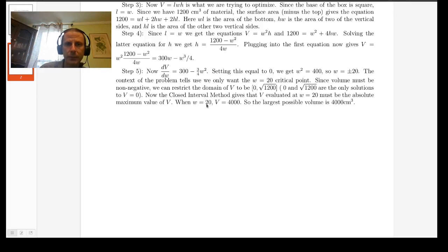So therefore the largest possible volume happens when the width is 20 and I suppose we could have calculated the height while we're at it. How do we get height? We know that the height has to be 1200 minus W squared over 4W. So if W is 20 we're going to get 1200 minus 400 which is 800 all over 80 so 100. So the height has to be 100. So when the height is 100 and W is 20 we get the largest possible volume of 4000 cubic meters.